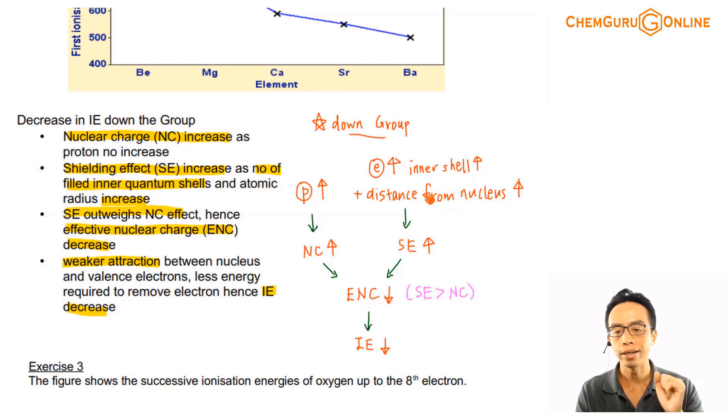Then second thing is, how do I add the electrons? There's an increase in the number of electrons, yes. But more importantly, the electrons are added to the next principal quantum shell. The number of inner shell increase, so there's more shielding effect, and the electrons get further away from the nucleus.